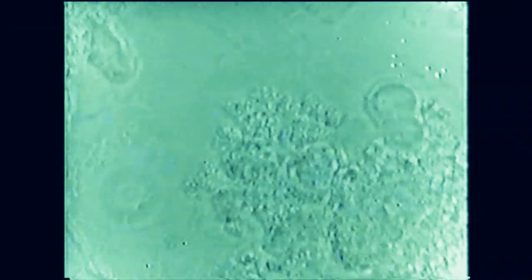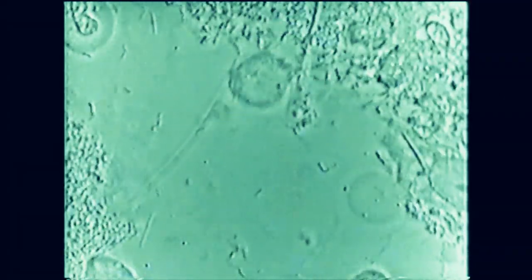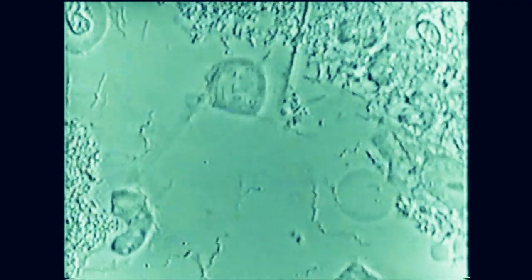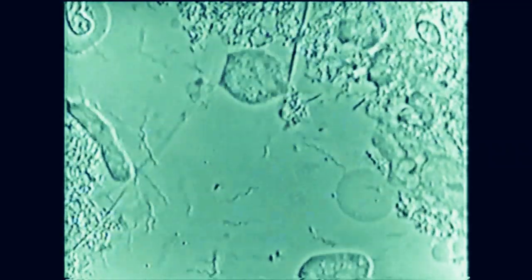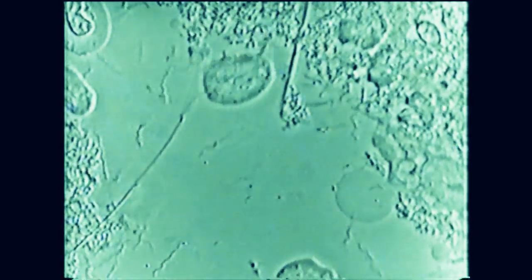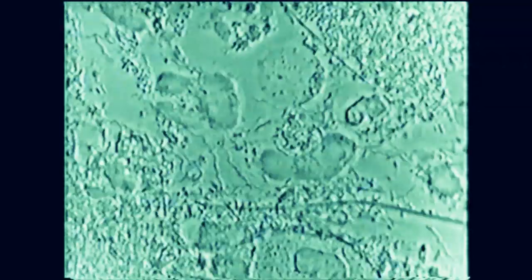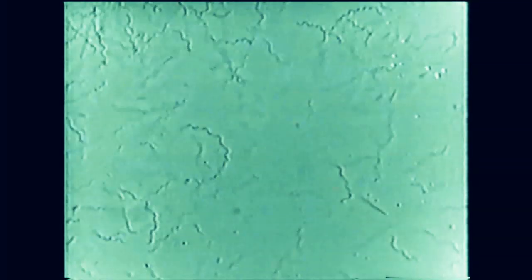Here we have a case of acute necrotizing ulcerative gingivitis, and we see clearly on the microscope the biofilm around the teeth under the gum. You see there are many spirochetes, of course, and also many trichomonas that are present and very motile. We also see red cells, some more trichomonas protozoa, different bacteria, spirochetes, and inflammation here.